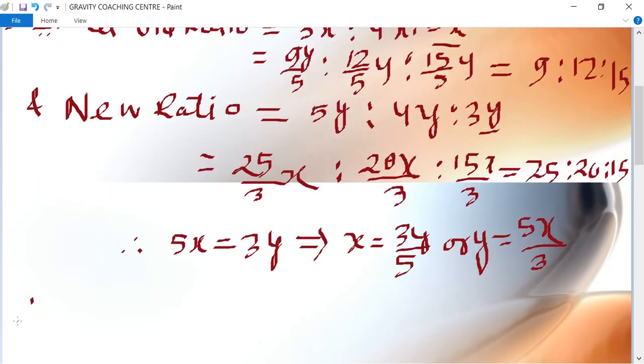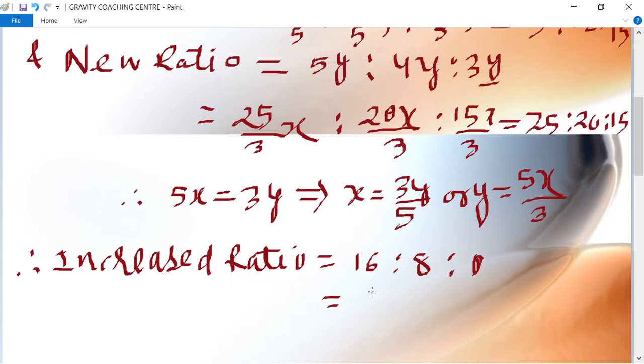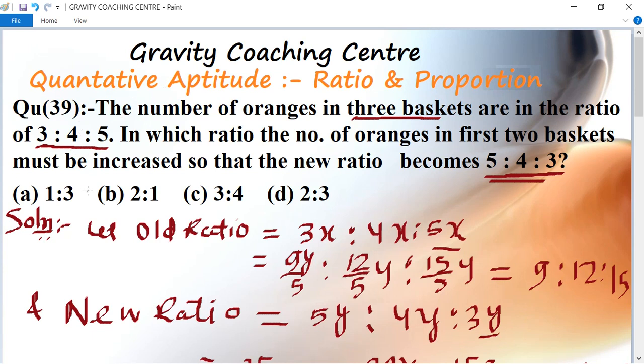Therefore, increased ratio equal to 25 minus 9 equals 16, ratio 8, ratio 0. So therefore 2 ratio 1, which is the required answer. Option B is the answer.